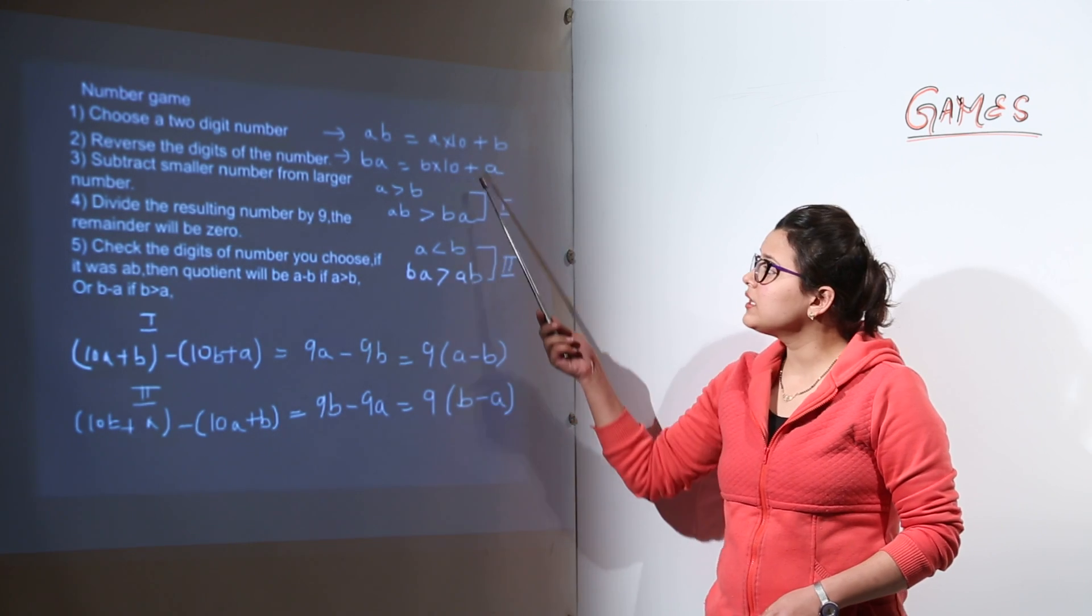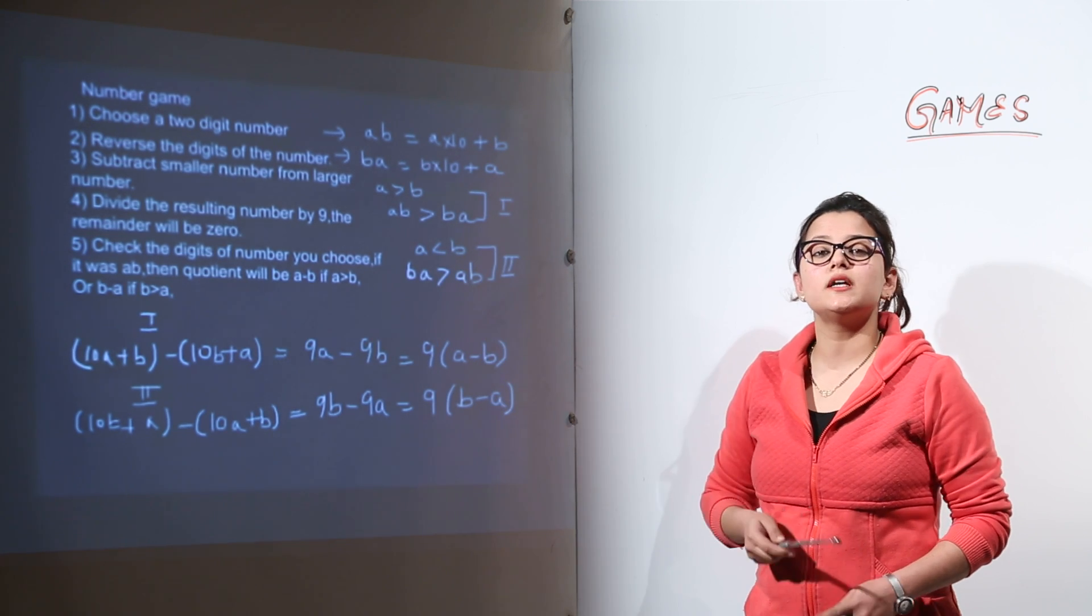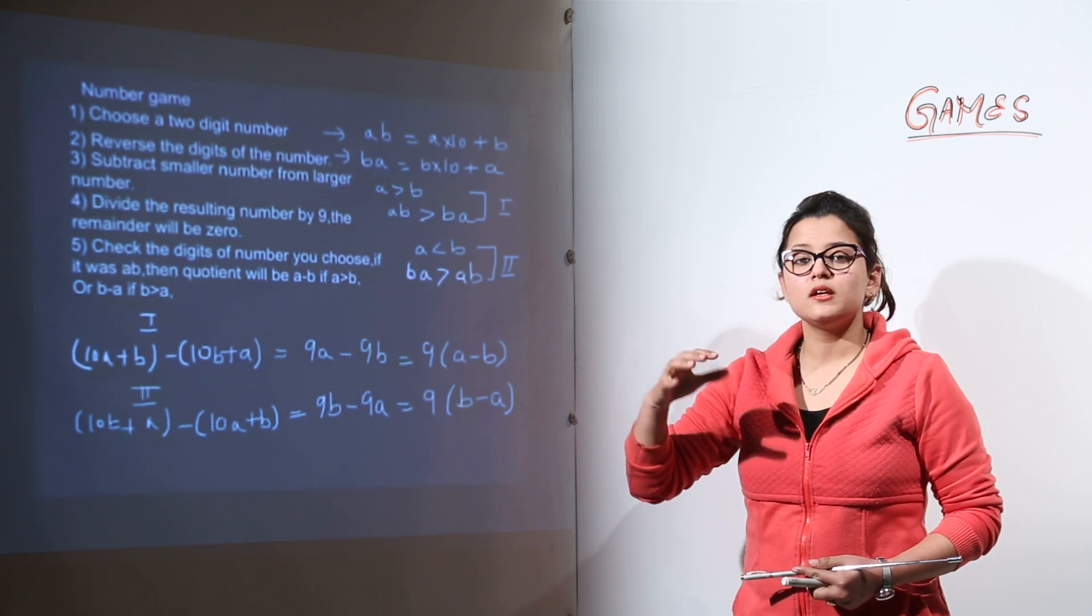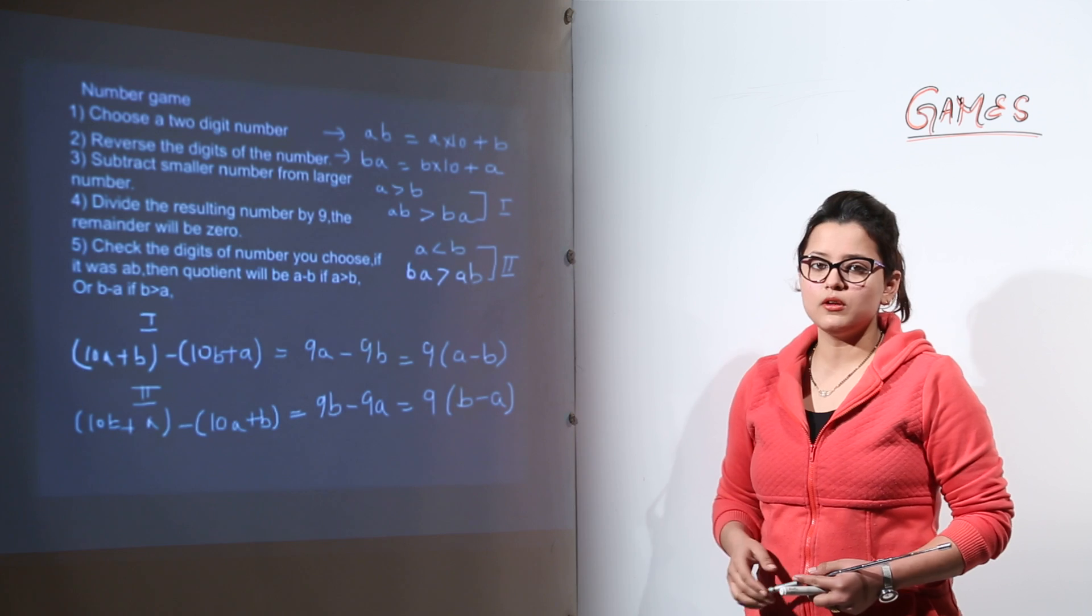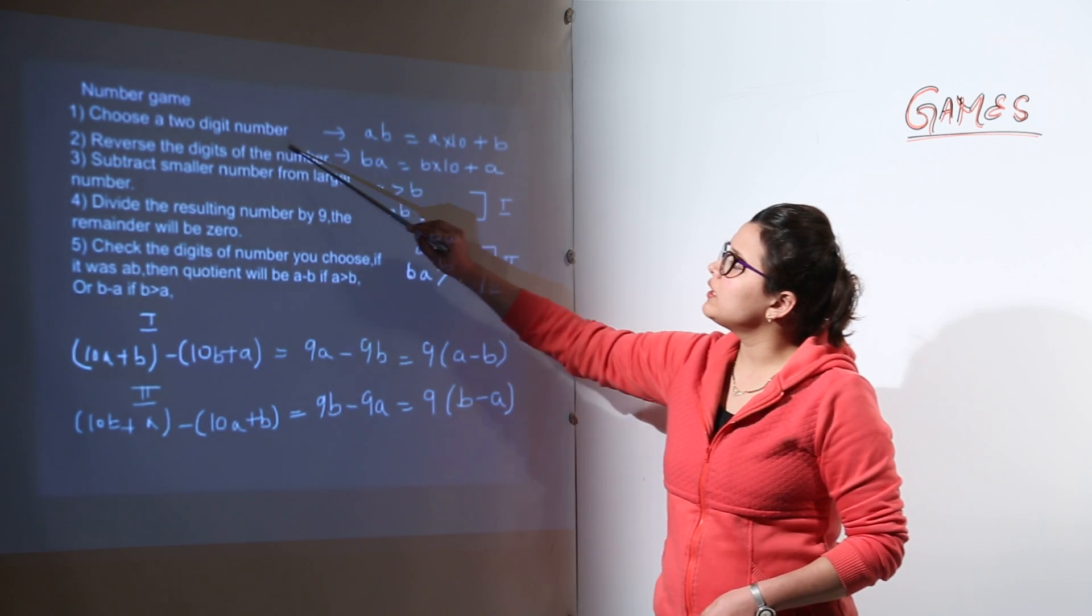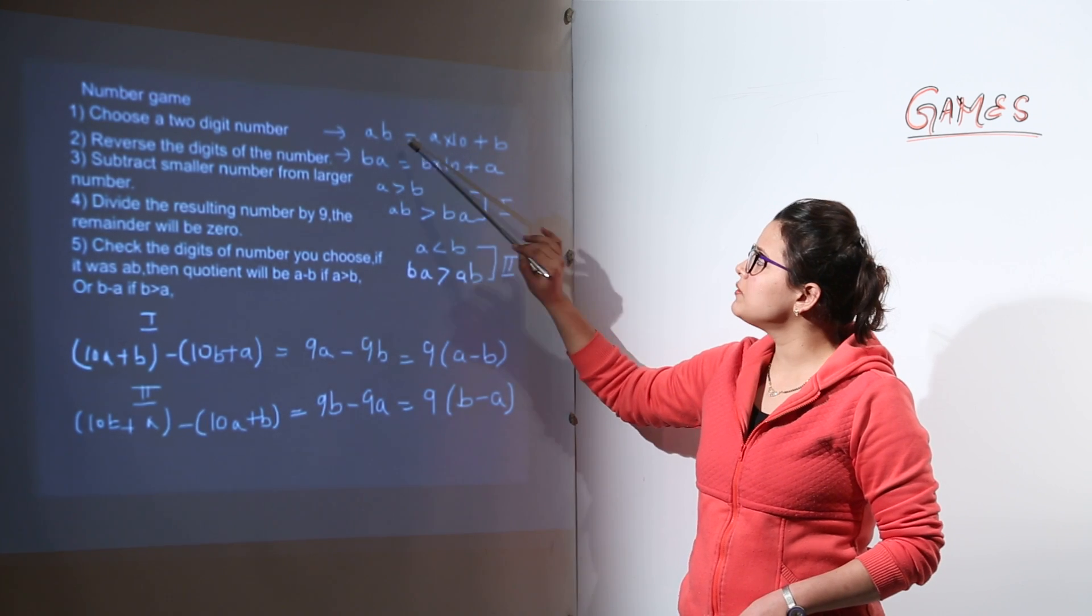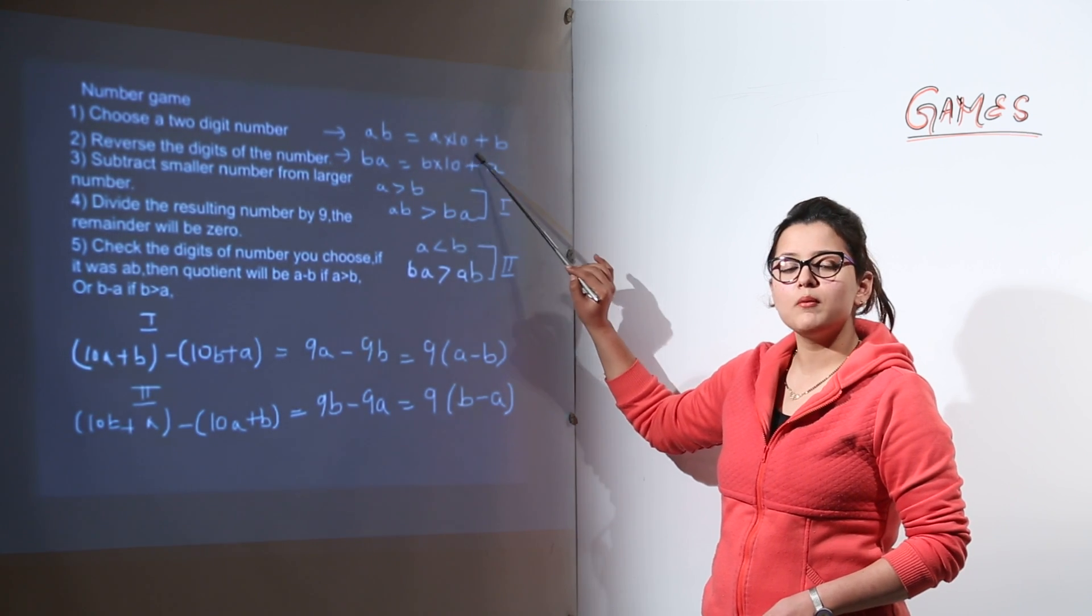Now for the same case I have taken up the general form because general form is the one that you must understand to apply it with any number of two digit numbers that you can take. So over here we have taken a two digit number that is AB. Now AB can be represented as A into 10 plus B.